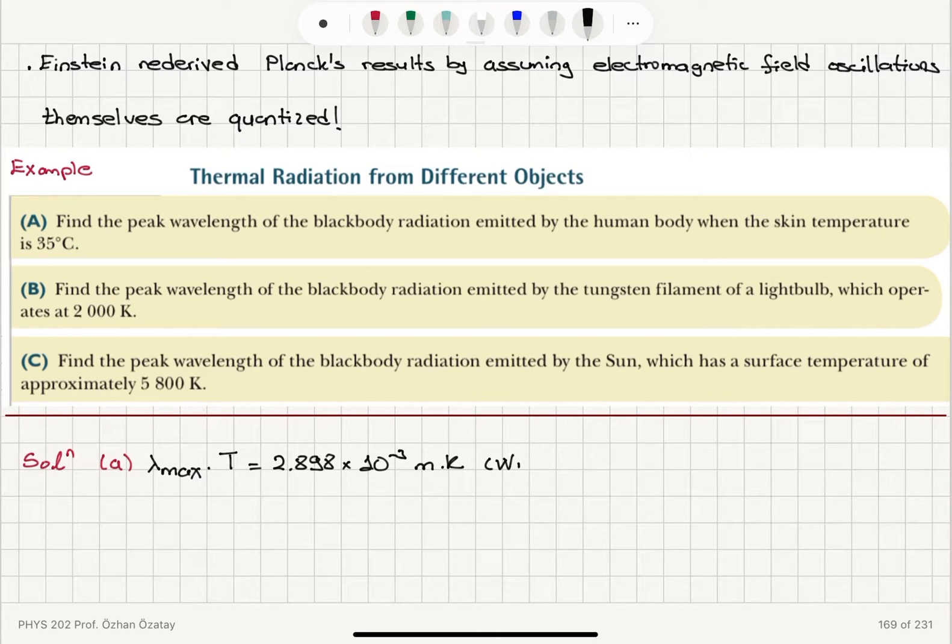Lambda max times temperature in Kelvin is 2.898 times 10 to minus 3 meters Kelvins. This is Wien's displacement law. We can calculate here the peak wavelength lambda max by dividing this constant 2.898 times 10 to minus 3 with the skin temperature in Kelvin. The skin temperature is 35 degrees Celsius, so it will be 35 plus 273.